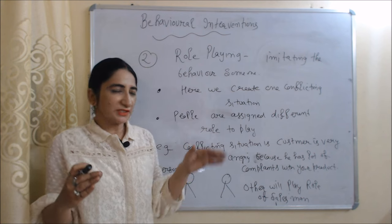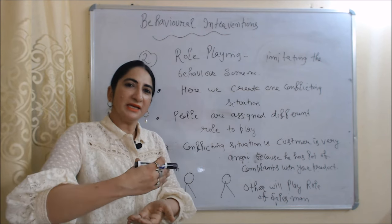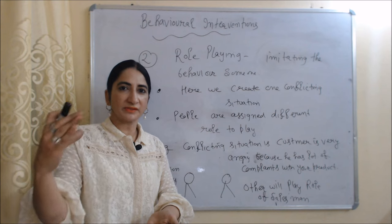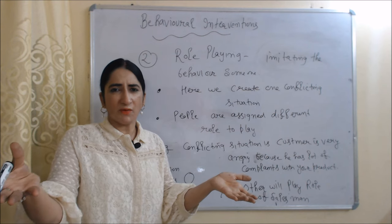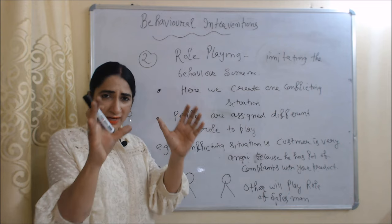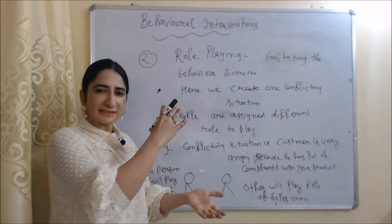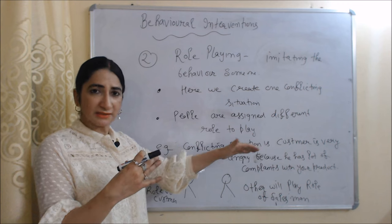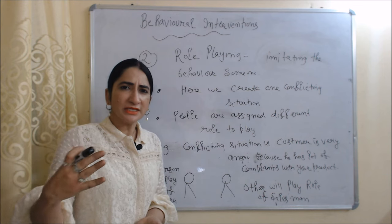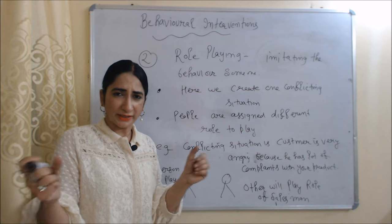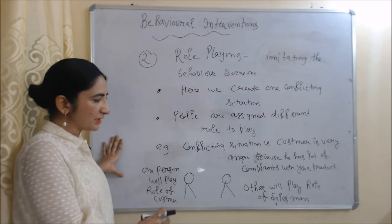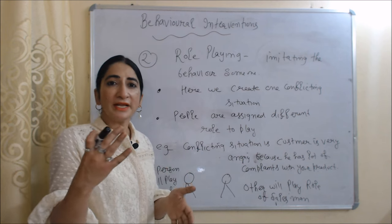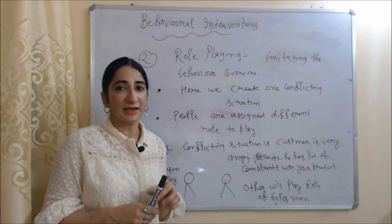The second behavioral intervention is role playing, which means imitating the behavior of someone — doing acting as someone. In role playing, we create one conflicting situation and people are assigned different roles to play. For example, the conflicting situation is that a customer is very angry because of complaints about your product. One person plays the role of customer and another plays the role of salesman, and we say to the salesman: deal with your customer. Role playing gives us much information about real-life situations.